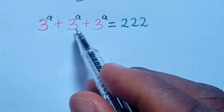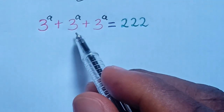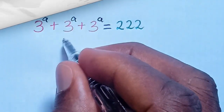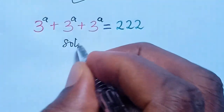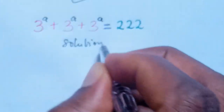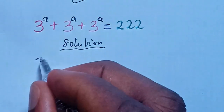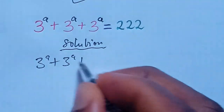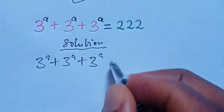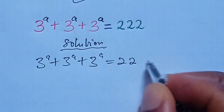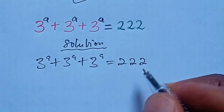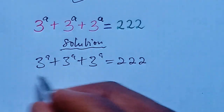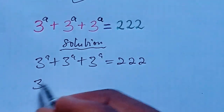What value of A will make the left hand side equal to the right hand side? The solution: 3 to the power of A plus 3 to the power of A plus 3 to the power of A equal to 222. Here, for the left hand side, we factor out 3 to the power of A.